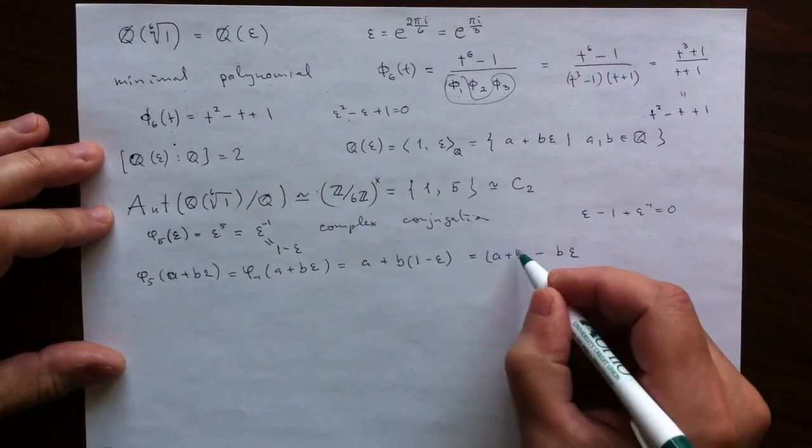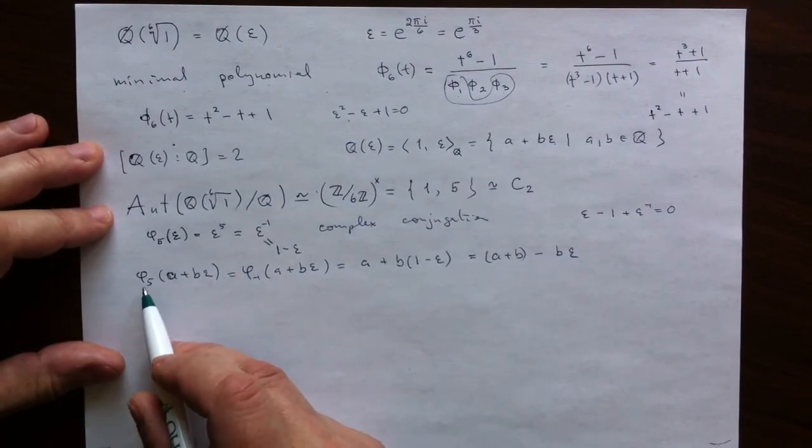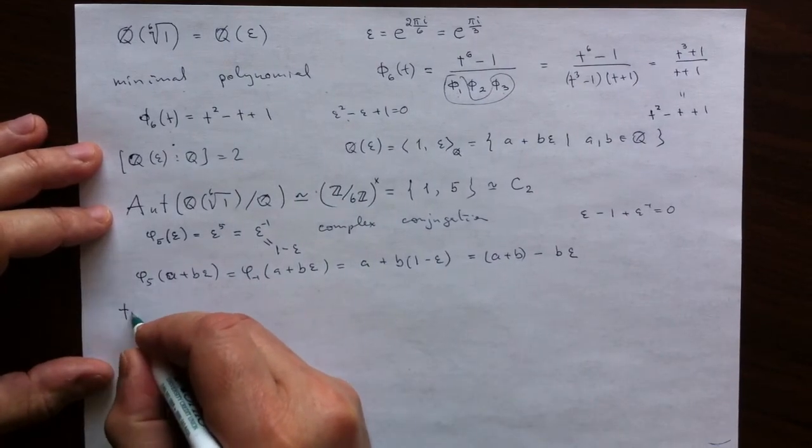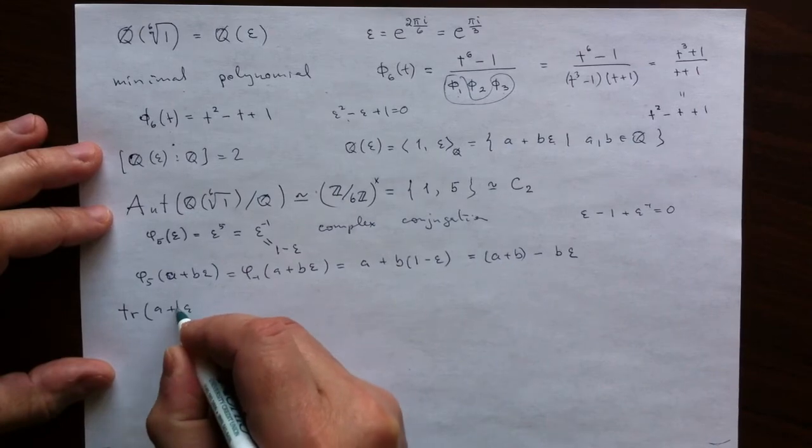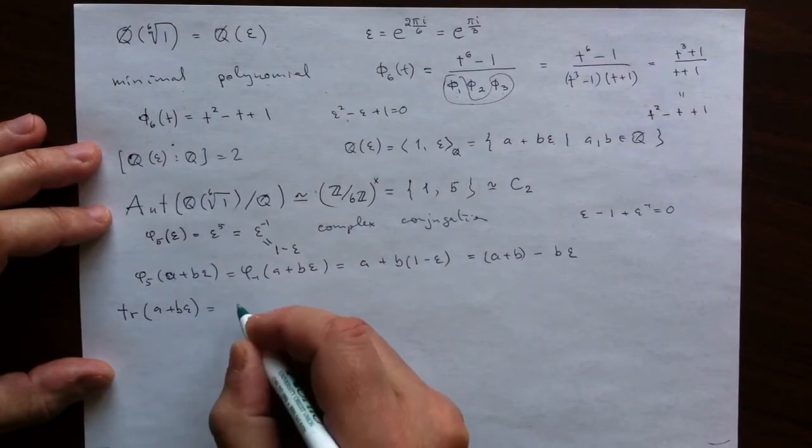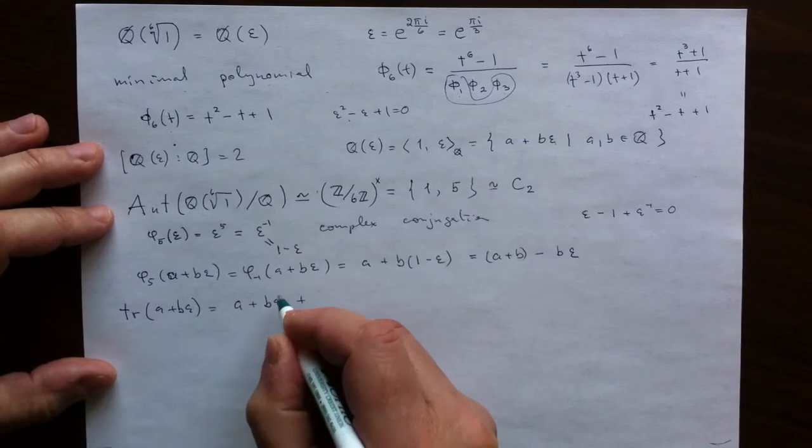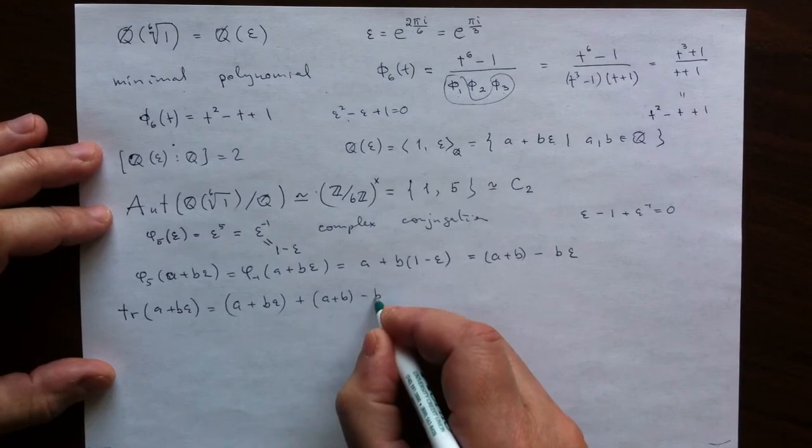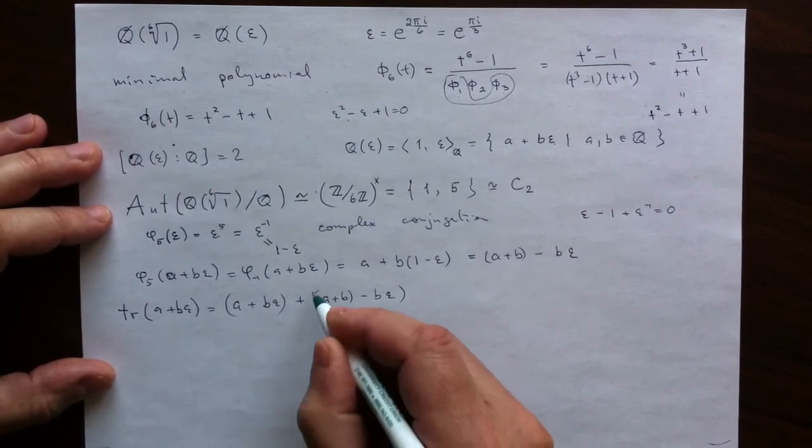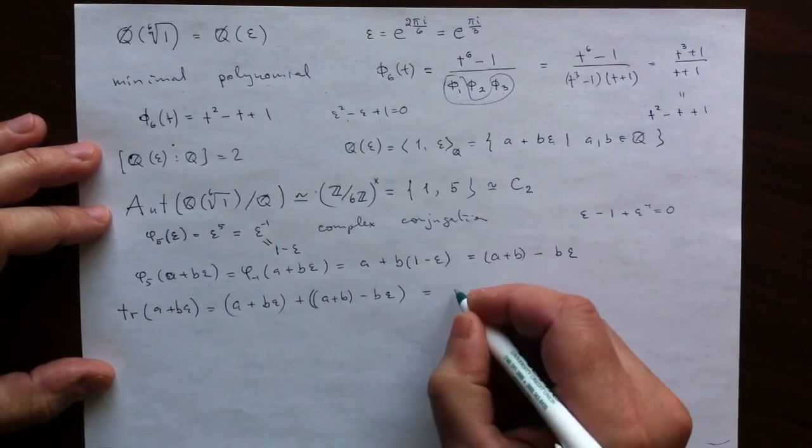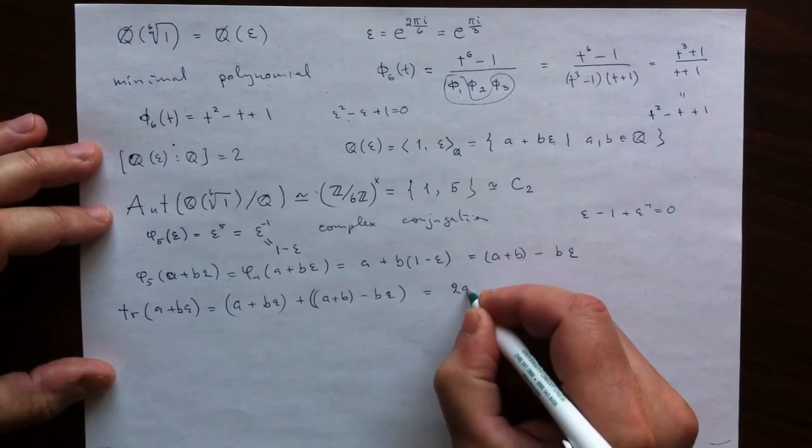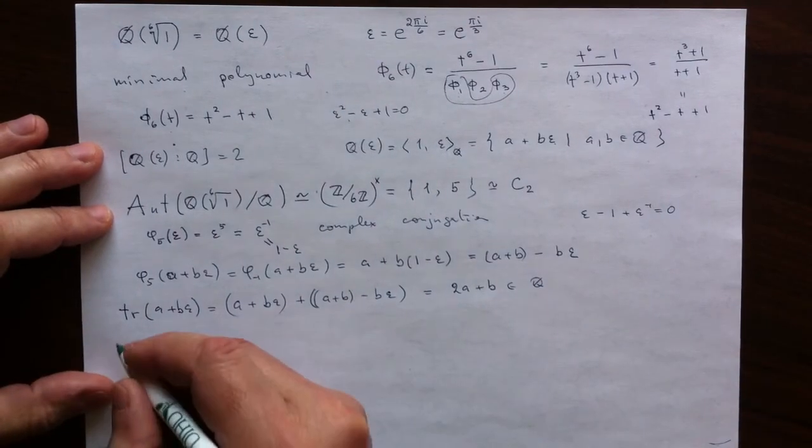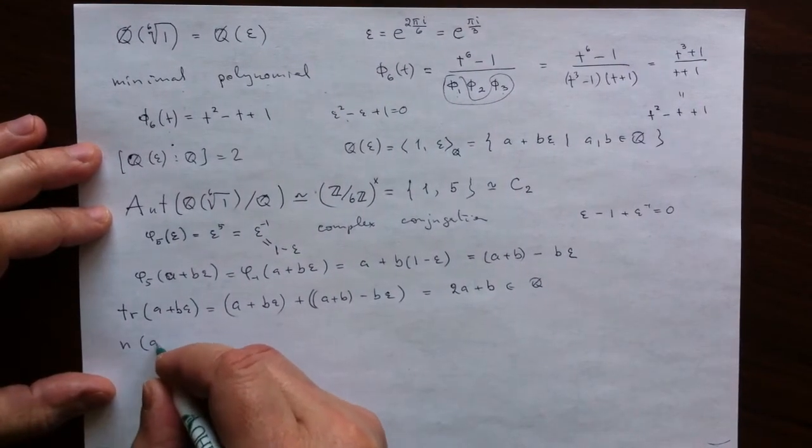Now we can compute the trace as the sum of the element and its algebraic conjugate. And when the dust settles, we have the answer, which is manifestly an element of the rational numbers, as it should be.